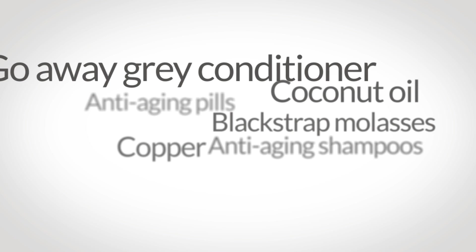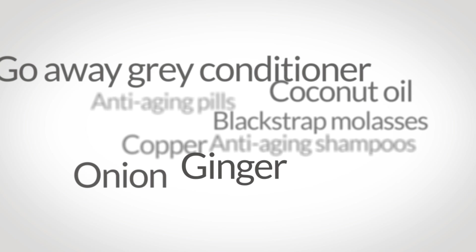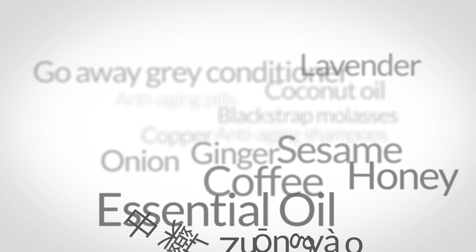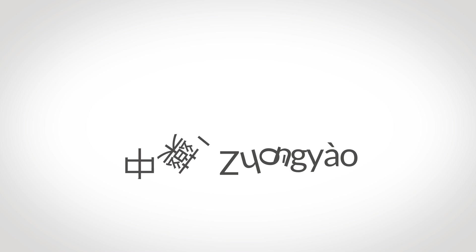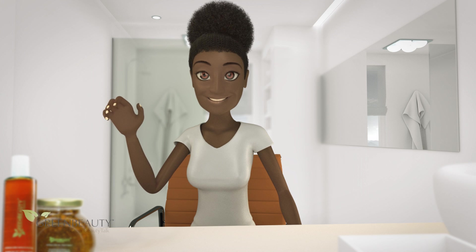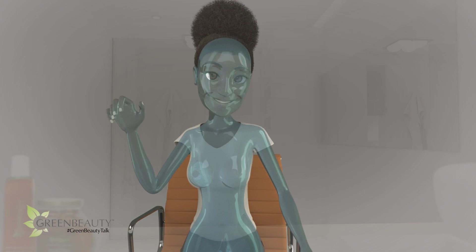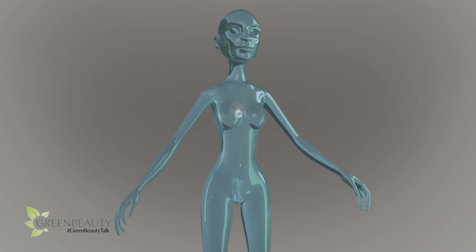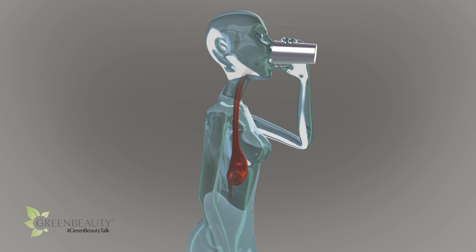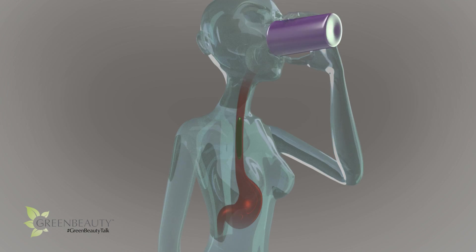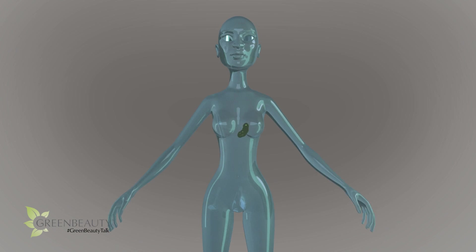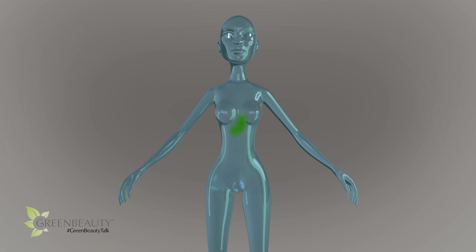There are tons of natural and synthetic remedies out there that claim to reverse premature graying, but some are more promising than others. According to traditional Chinese medicine, gray hair is less about aging and more about weak kidneys and having low-quality blood. Believe it or not, chlorophyll — found in dark green leafy vegetables — is an exceptional long-term option for preventing and reversing grays at any age.